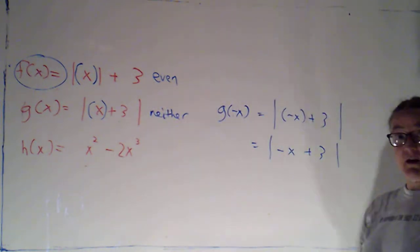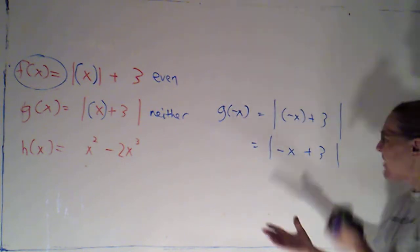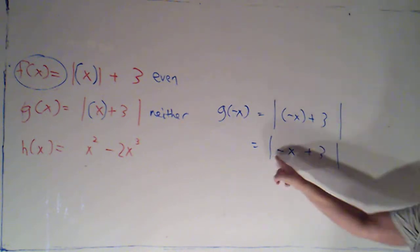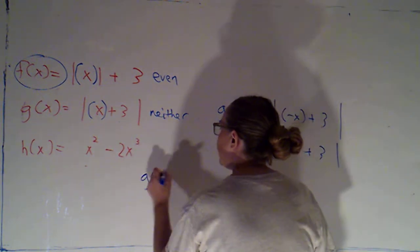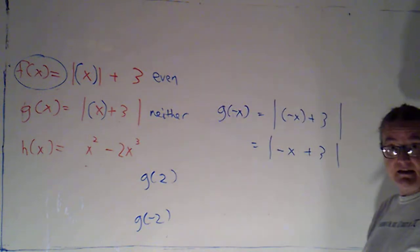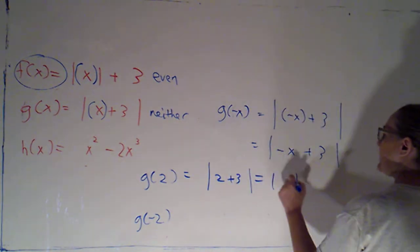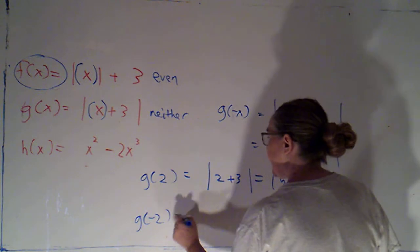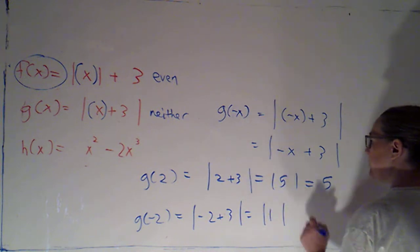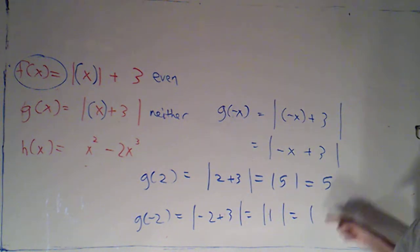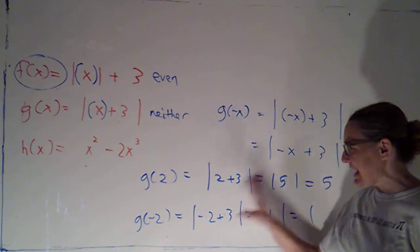Now, if you're trying to prove whether something is even or odd, you do need to work with arbitrary things. But sometimes, if you're not quite sure whether you can use the absolute value to get rid of that negative sign, it might be helpful to just give yourself an example. So if I look at g of 2 and g of negative 2: g of 2 is the absolute value of 2 plus 3, that's the absolute value of 5, that's 5. g of negative 2 is the absolute value of negative 2 plus 3, that's the absolute value of 1, that's 1. I didn't get the same thing; I didn't get the opposite thing. It's neither.